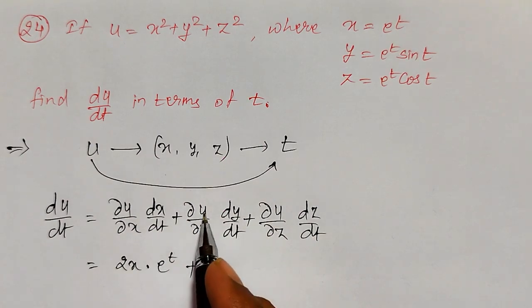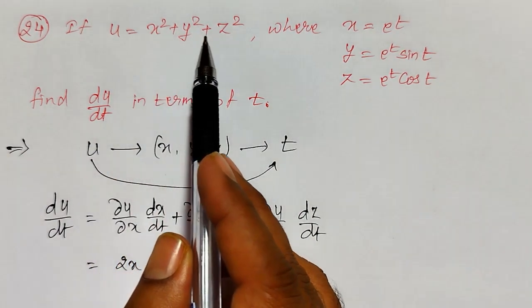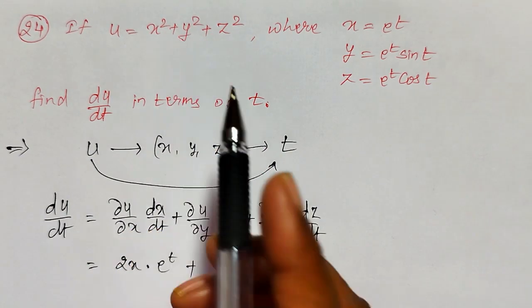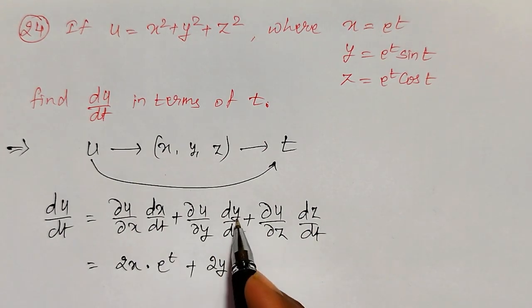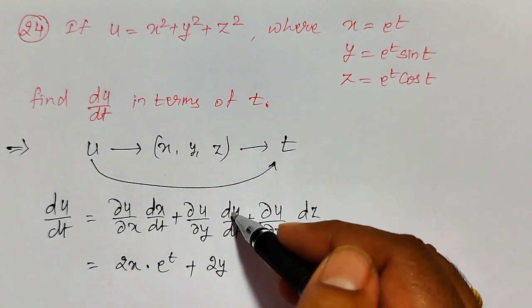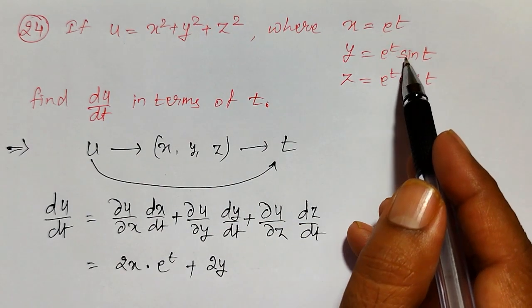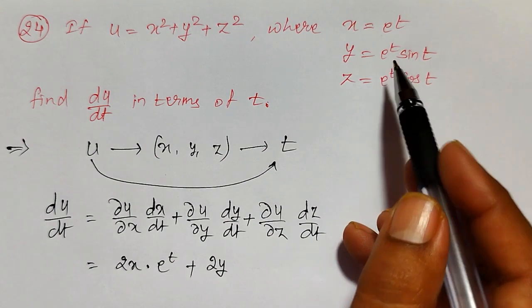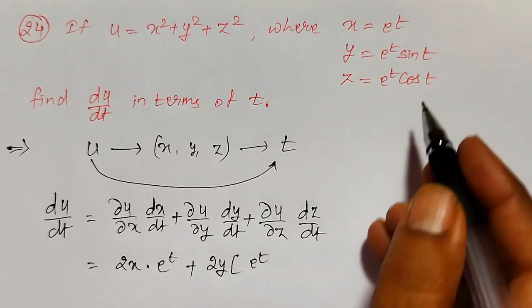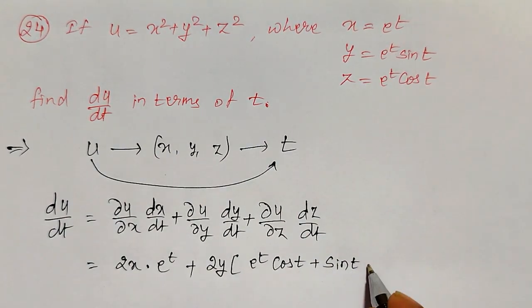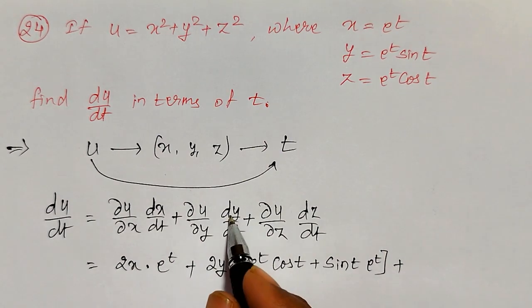Next, ∂u/∂y: while differentiating partially with respect to y, x and z are constant, so only y² needs to be differentiated, giving 2y. Multiply by dy/dt. Since y = e^t · sin(t), it is a product of two terms, so using the product rule: dy/dt = e^t · cos(t) + sin(t) · e^t.